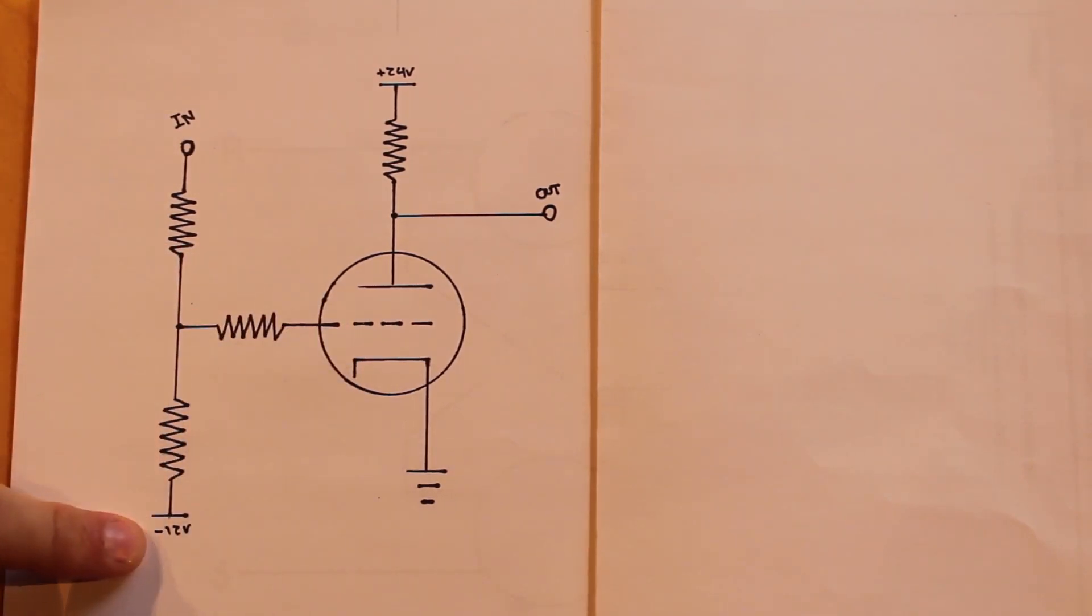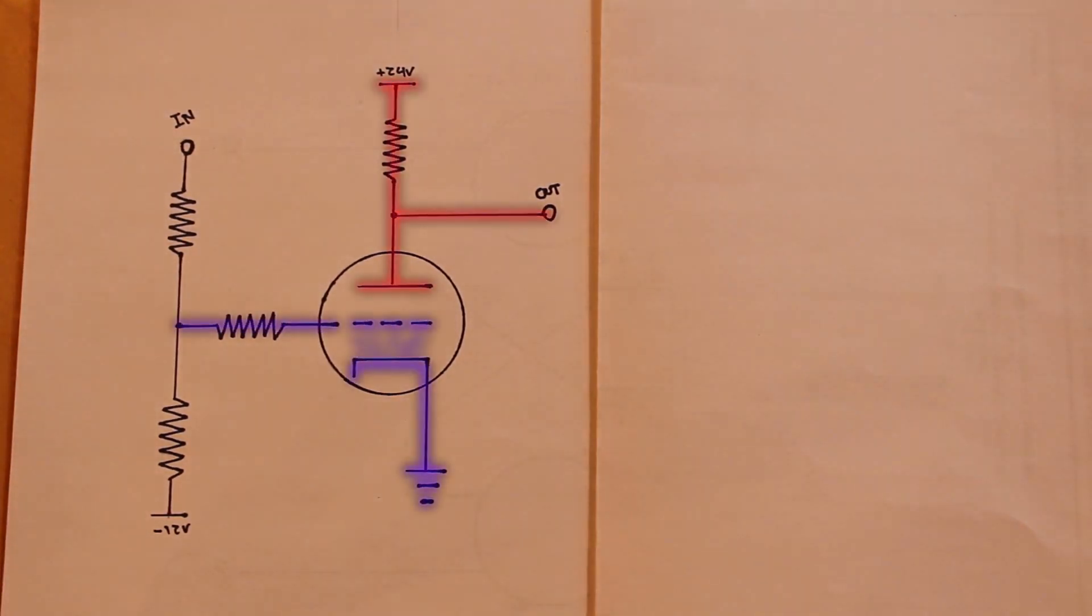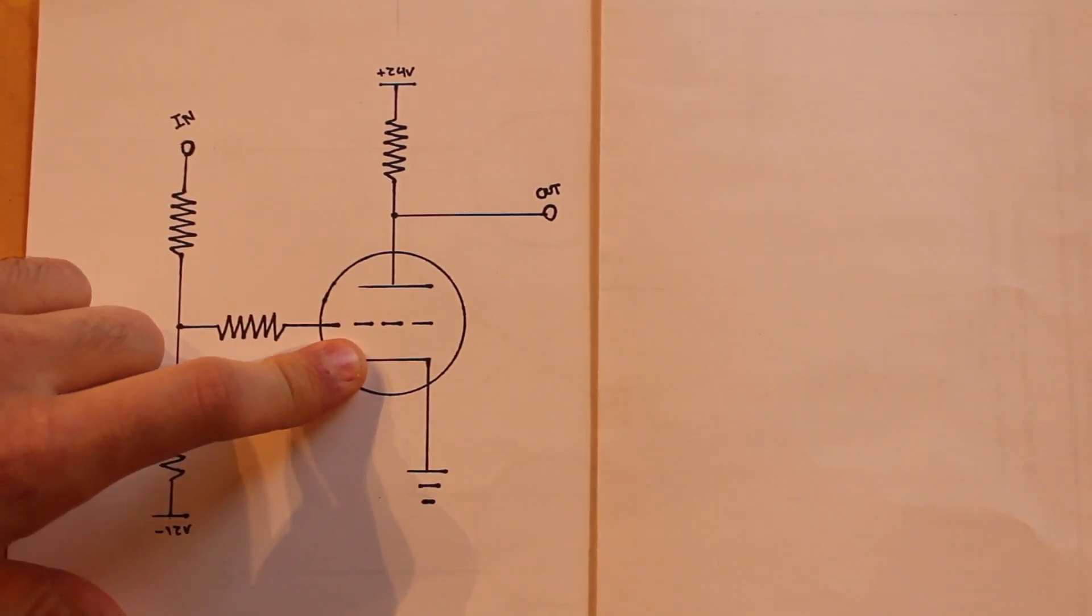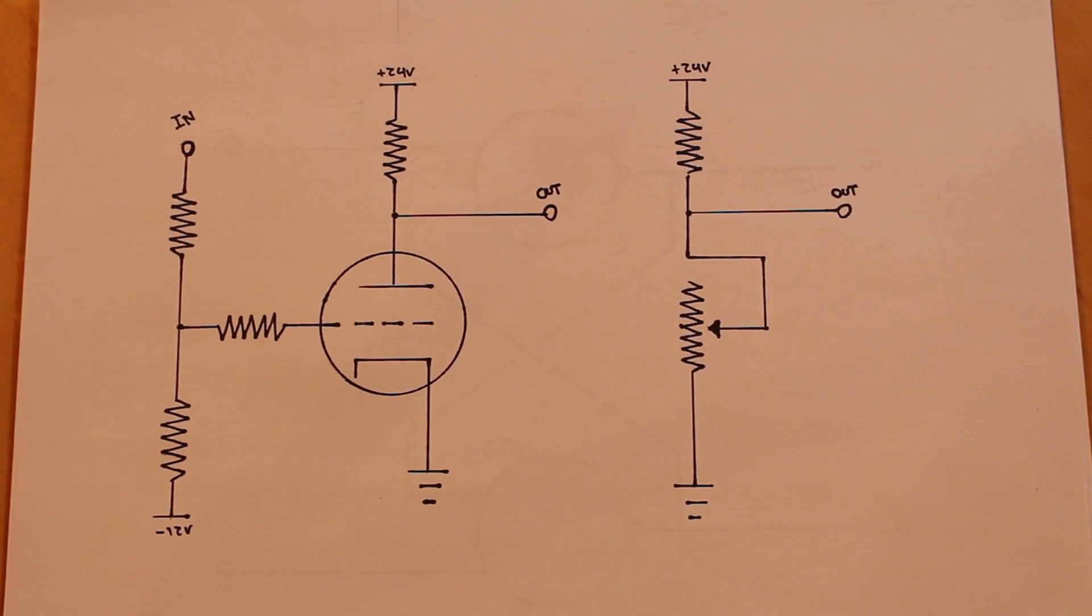The grid ultimately controls the amount of electron flow through the tube. So if the grid is completely negative, there's no electron flow through the tube at all, which means that our output gets pulled up to the same level as our B plus voltage, which in this case is 24 volts. Now when the tube starts conducting and it goes into full saturation, the output's going to be pulled low. And this act of pulling the output high and low is how we're getting our logic high and logic low that we're using in all of our circuits.